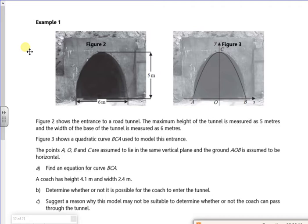Shows the entrance of a road tunnel. Maximum height is measured at 5 meters, the width of the base of the tunnel is 6 meters. So figure 3 shows a quadratic curve to model this. Okay, so if you look, we've